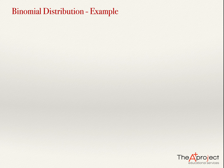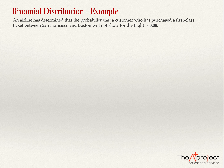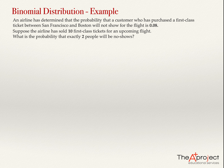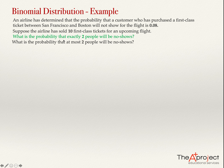We have a binomial distribution problem. An airline has determined that the probability that a customer who purchased a first-class ticket between San Francisco and Boston will not show for the flight is 0.08. Suppose the airline sold 10 first-class tickets for an upcoming flight. We have two questions: what is the probability that exactly two people will be no-shows, and what is the probability that at most two people will be no-shows?